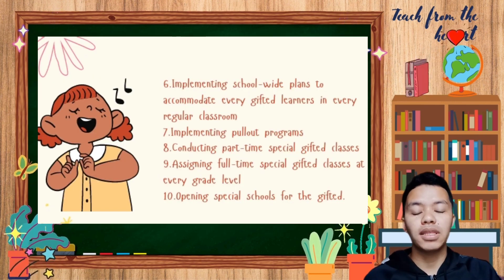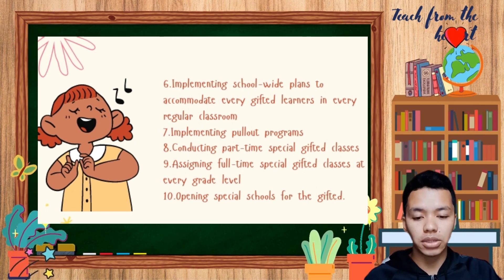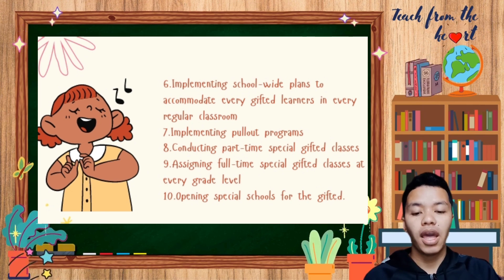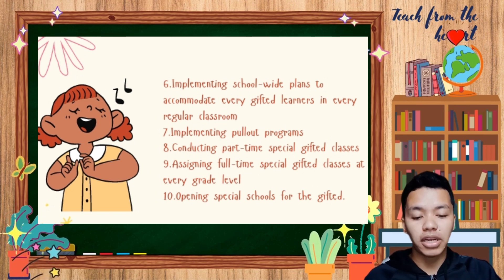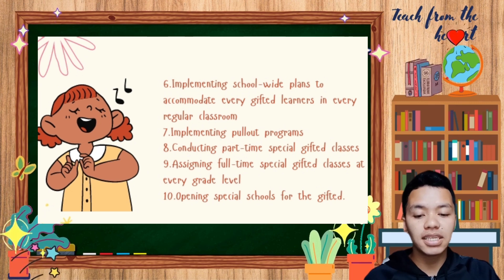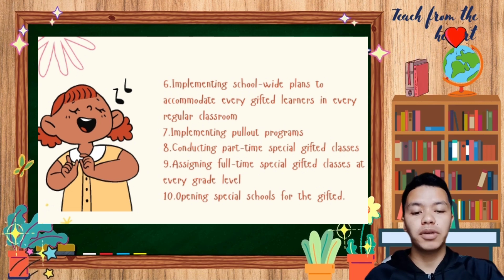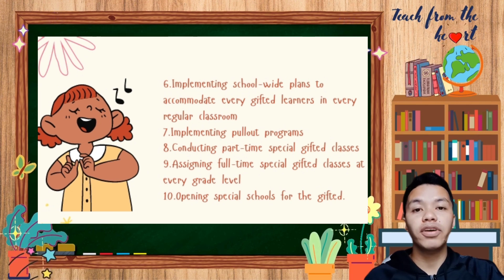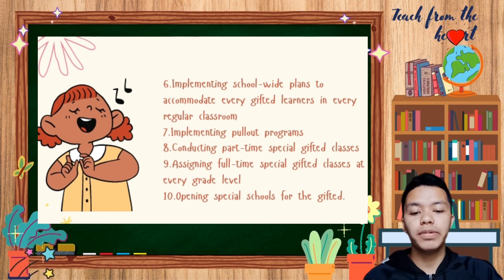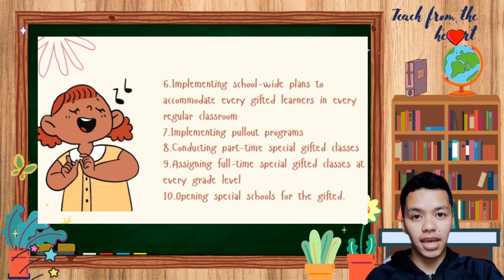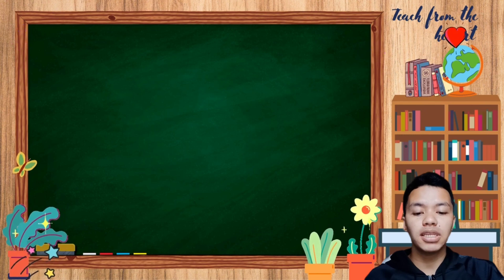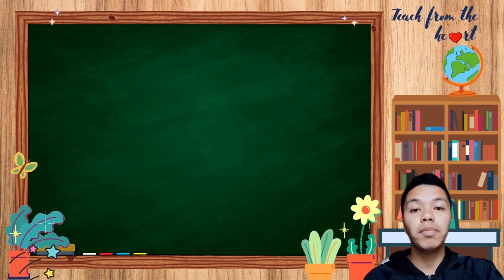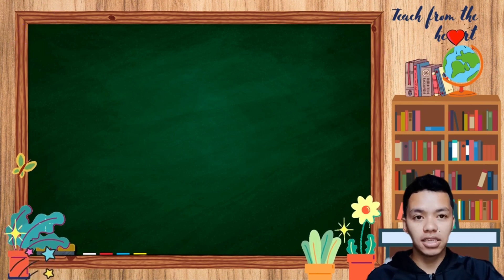Further program options include implementing school-wide plans to accommodate every gifted learner in every regular classroom; implementing pull-out programs; conducting part-time special gifted classes; assigning full-time special gifted classes at every grade level; and opening special schools for the gifted. With all these alternatives, one must consider all pertinent issues and concerns when planning the best program for gifted and talented learners.